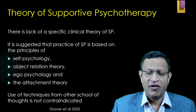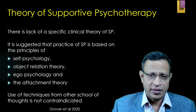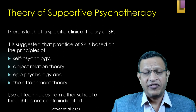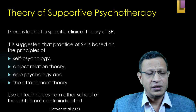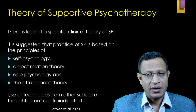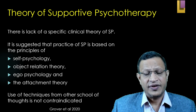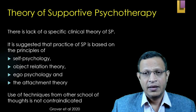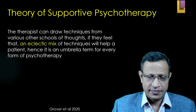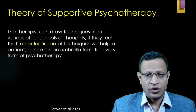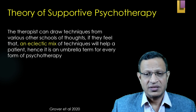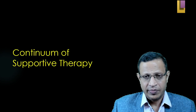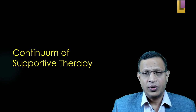There is a lack of specific clinical theory for supportive psychotherapy. It has borrowed theories from various schools of thought such as self psychology, object relational theory, ego psychology, and attachment theory. Using techniques from other schools is not contraindicated — it can borrow from CBT, behavioral therapy, ERP, dialectical behavioral therapy, and others. The therapist can draw from various schools if an eclectic mix will help the patient. Hence supportive psychotherapy is considered an umbrella term.